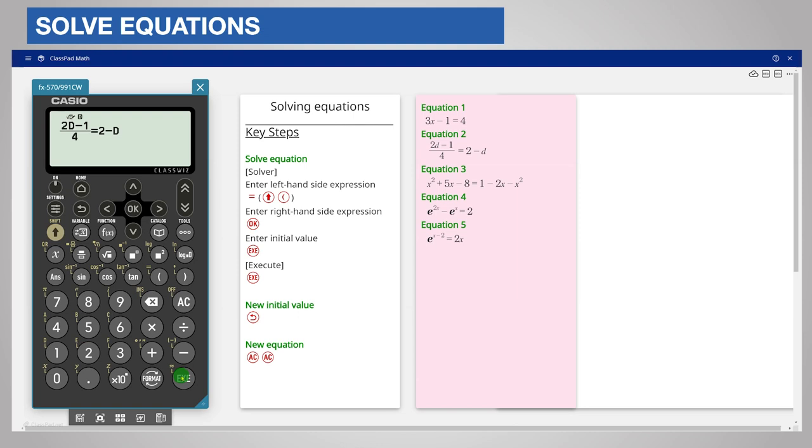Press the execute or ok key and enter the initial value. 0 would be ok here as well so scroll down and choose execute. The solution is d is equal to 1.5. The calculator displays the answer for d because that was the variable. You can use any letter available on the calculator a to f and x y or z.